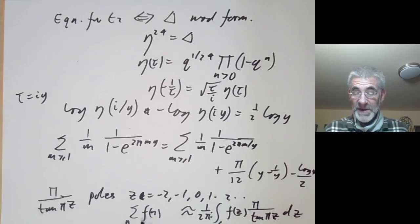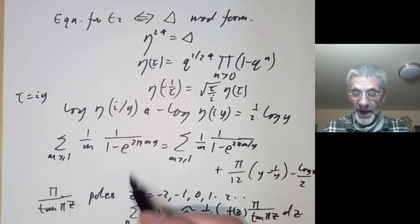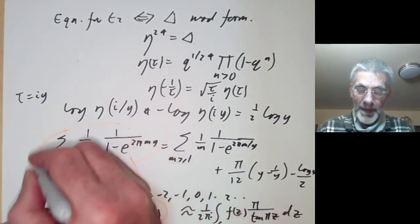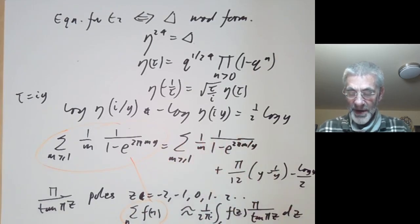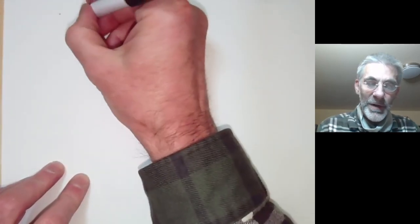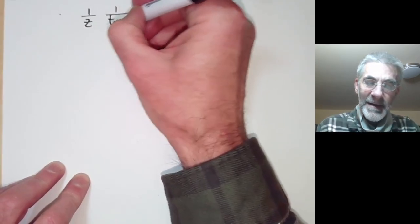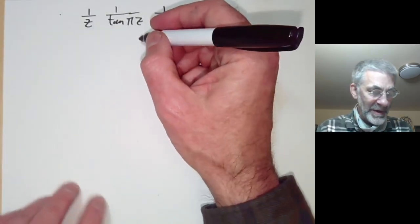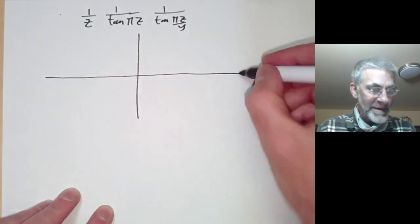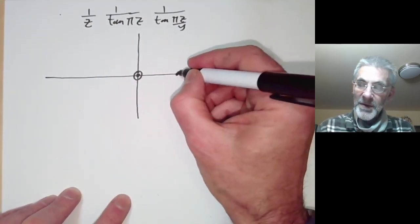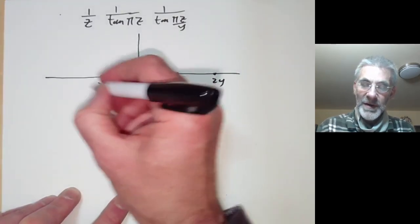This is a standard technique in complex analysis for summing series. We apply it to the function 1/z times 1/tan(πz) times 1/tan(πz/y), and examine where its poles and zeros are.